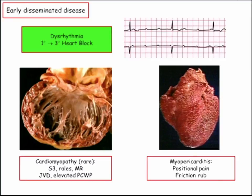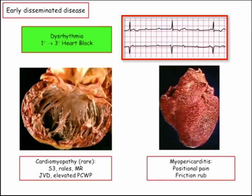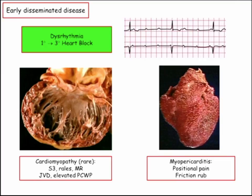Heart block — third degree heart block. It can be first degree, but third degree is how they'll do it on the boards: P waves with no QRS, no correlation between the two. You can get a cardiomyopathy — rare, but on the boards they won't say 'cardiomyopathy'; they'll describe S3, rales, mitral regurgitation from a dilated annulus, JVD, etc. They can get pericarditis too.